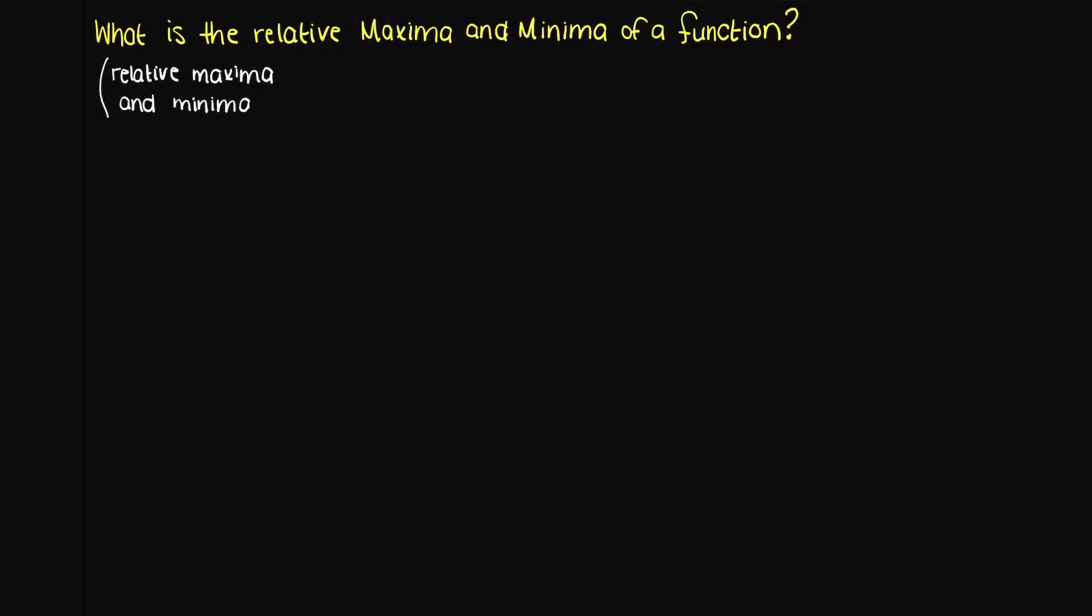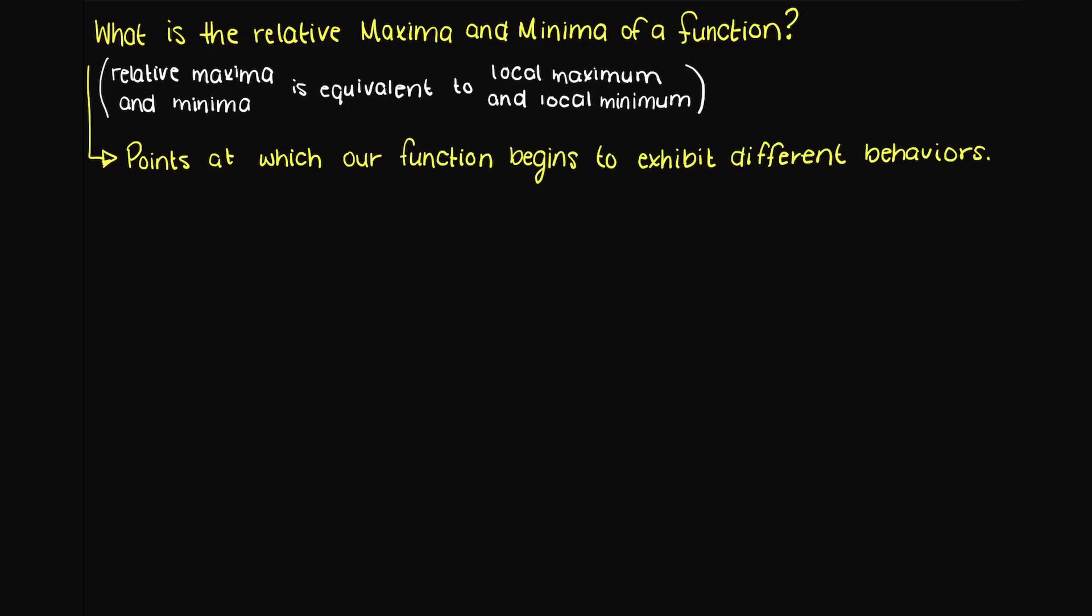Before I begin, I just want to clarify that these terms may also be called local maximum and local minimum. The relative maxima and minima are points at which our function begins to exhibit different behaviors. Let's give some proper definitions to both these terms to ensure that we really understand.